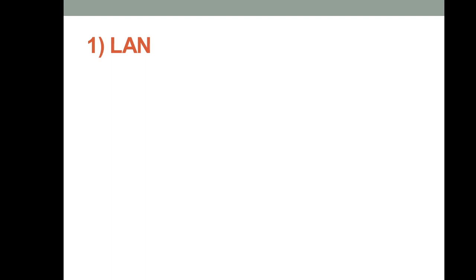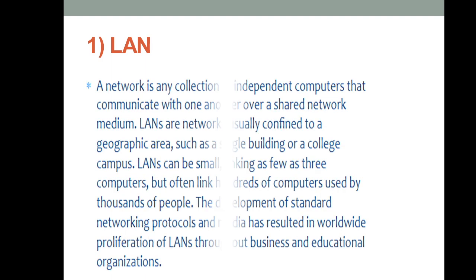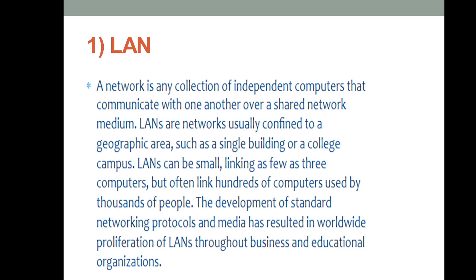The first type of computer network is LAN, Local Area Network. This is any collection of independent computers that communicate with one another over a shared network medium. The main limitation is that LANs are usually confined to a geographic area, like within a single building or a college campus. In your labs, you have LAN wires, and with the help of those you can access the internet. A LAN can be small, linking as few as three computers, or it can have 50 to 100 computers used by thousands of people.